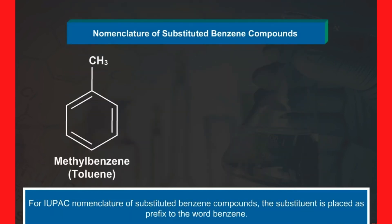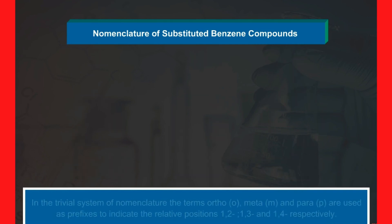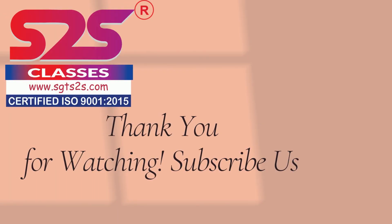For IUPAC nomenclature of substituted benzene compounds, the substituent is placed as a prefix to the word benzene, as shown in the given examples. In the trivial system of nomenclature, the terms ortho, meta, and para are used as prefixes to indicate the relative positions 1,2; 1,3; and 1,4 respectively.